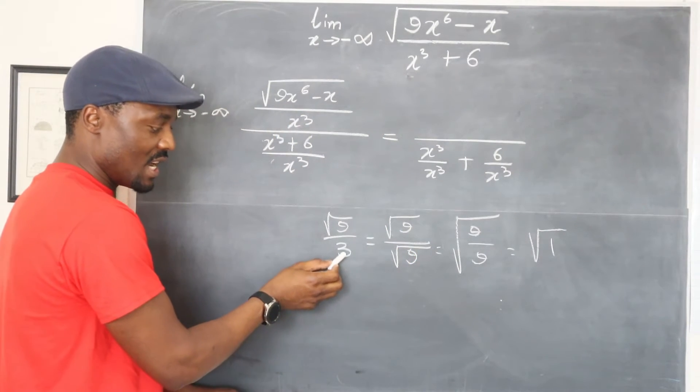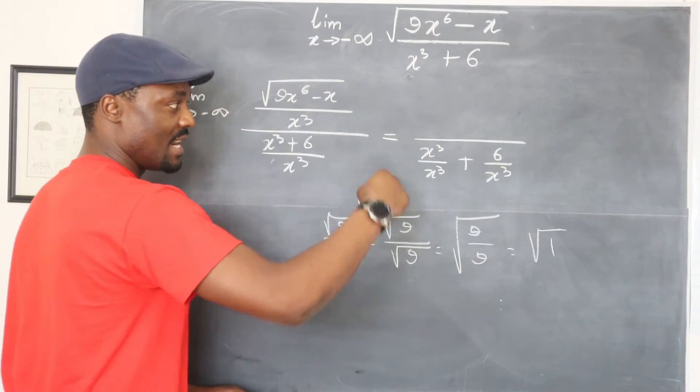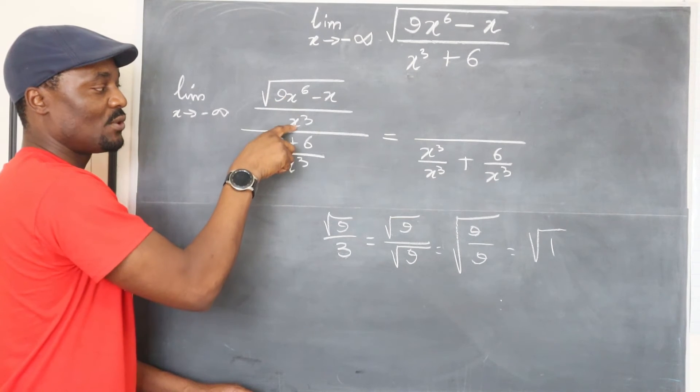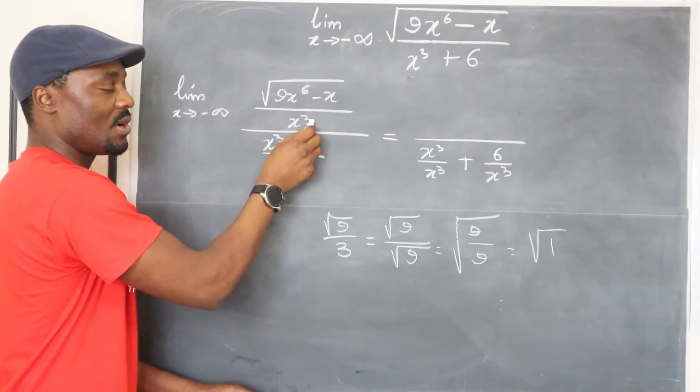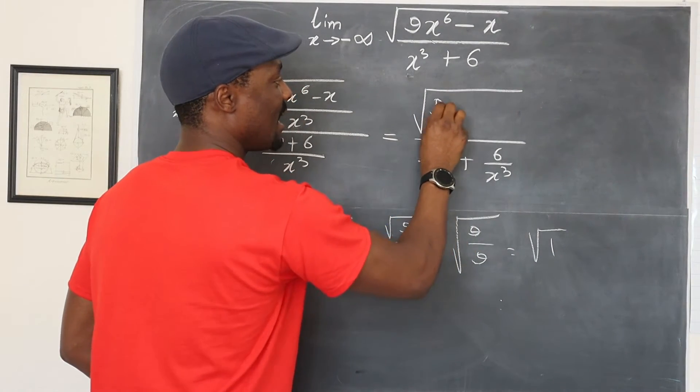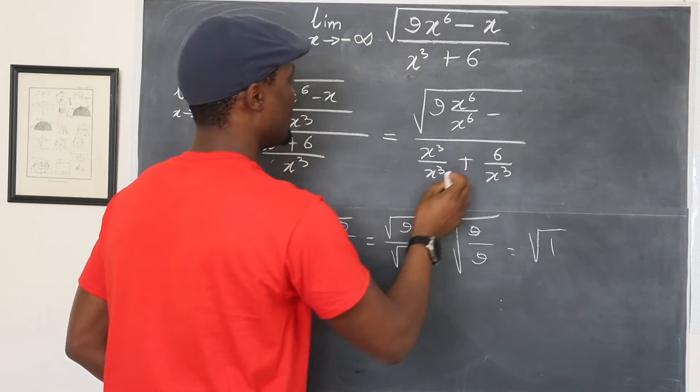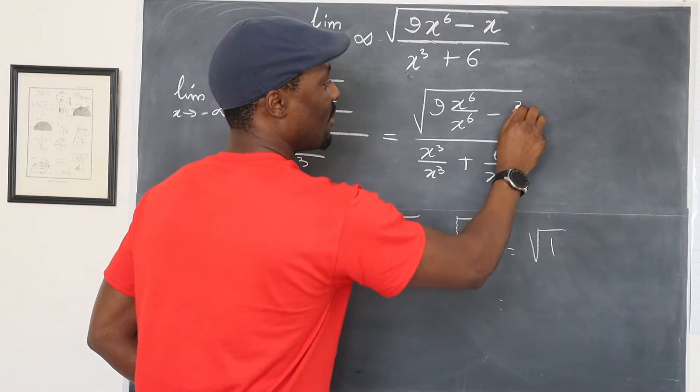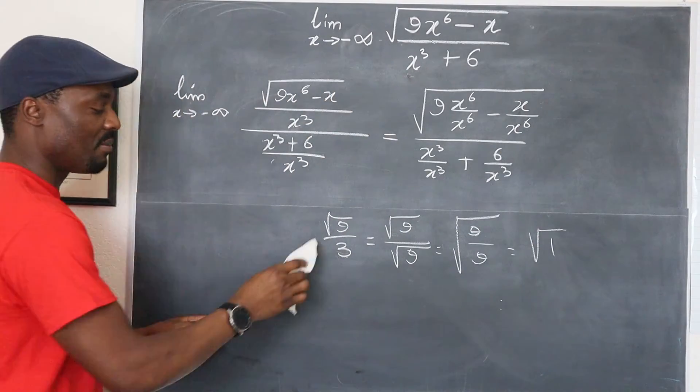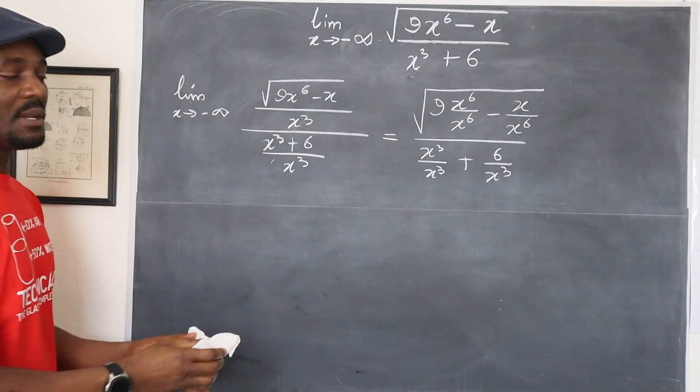So you can see for you to push a number under the square root sign, you have to square that number and then it will stay under. So for us to push this under the square root sign, I have to square this. So x to the third will now become x to the sixth. So I can rewrite this as nine x to the sixth over x to the sixth minus x into x to the sixth. So this has simplified our problem and we can get much simpler answers.